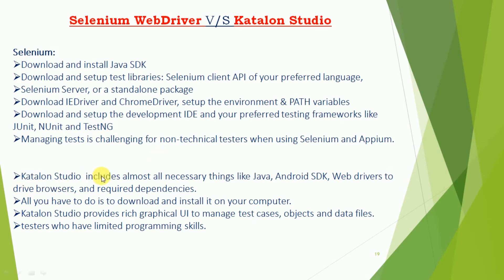But with Katalon Studio, it includes all the necessary things — Java, Android SDK for mobile automation, web drivers to drive your browser, and all required dependencies and third-party tools — all come bundled with Katalon Studio. All you have to do is download and install it on your computer. Katalon Studio provides a rich graphical UI to manage test cases, objects, and data files. It is completely user-friendly, and testers with limited programming skills can easily maintain their automation framework using Katalon Studio.